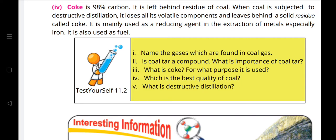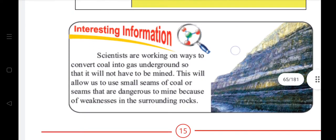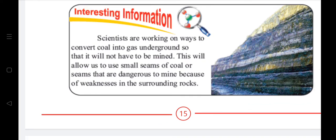Some review questions: Name the gases found in coal gas. Is coal tar a compound? What is the importance of coal tar? What is coke and for what purpose is it used? Which is the best quality of coal? What is destructive distillation? Interesting information: Scientists are working on ways to convert coal into gas underground so it will not have to be mined, allowing use of small or dangerous seams.